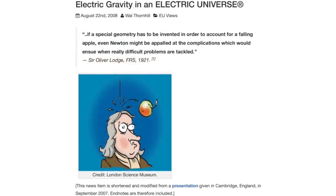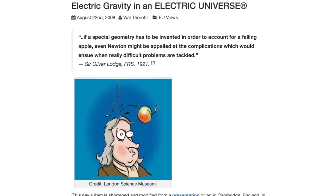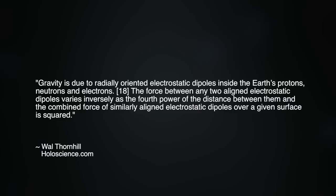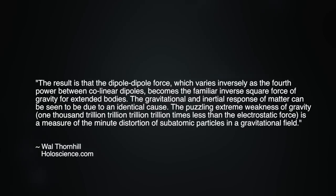This is from the holoscience.com website, Electric Gravity and Electric Universe. This is Wal's theory that gravity is due to radially oriented electrostatic dipoles inside Earth's protons, neutrons, and electrons. The force between any two aligned electrostatic dipoles varies inversely as the fourth power of the distance between them, and the combined force of similarly aligned electrostatic dipoles over a given surface is squared. The result is that the dipole-dipole force becomes the familiar inverse square of gravity for extended bodies.